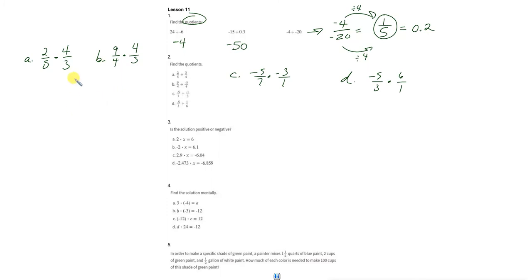Positive times a positive is a positive. You have no diagonal factors, so this is going to be 6 fifteenths. So, the first one is 6 fifteenths.